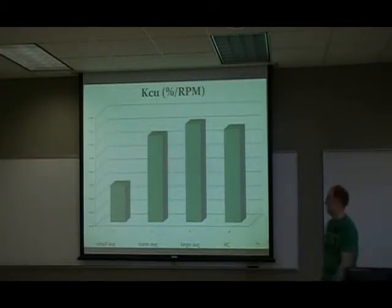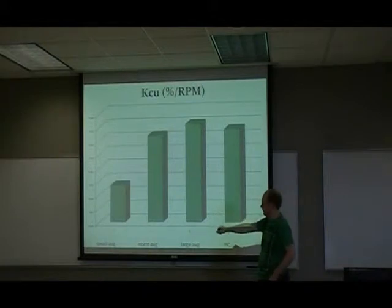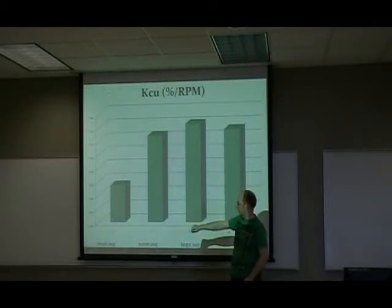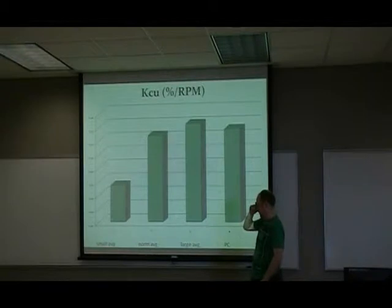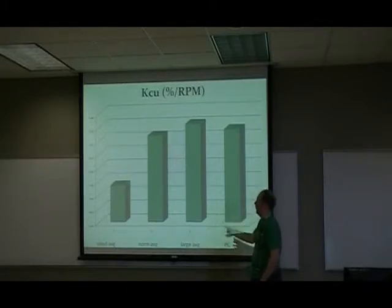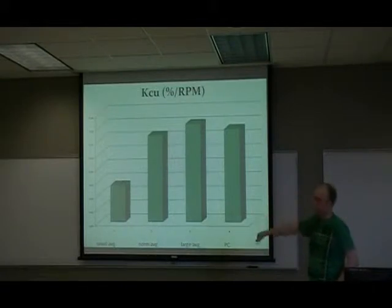This is the KC ultimate value for the large tau. This is the average of the two small tau results. We have small tau, normal tau, large tau, and a large basin, as a proportional controller. And as you can see, they all meet up fairly well, except for the small one.